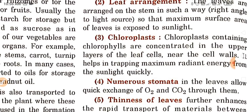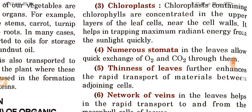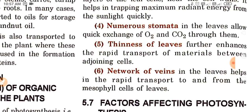Next is chloroplasts — chloroplasts containing chlorophyll are concentrated in the upper layers of the leaf cells near the cell walls, helping in trapping maximum radiant energy from sunlight quickly. Numerous stomata in the leaves allow quick exchange of O2 and CO2. Thinness of leaves further enhances the rapid transport of material between adjoining cells. The network of veins in the leaves helps in the rapid transport to and from the mesophyll cells of the leaves.